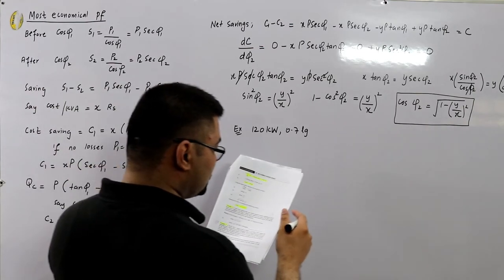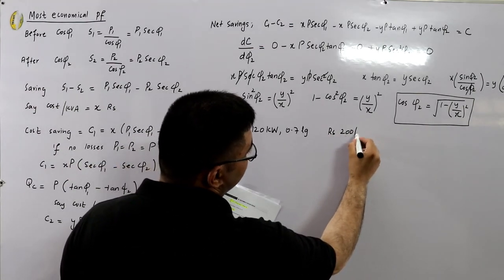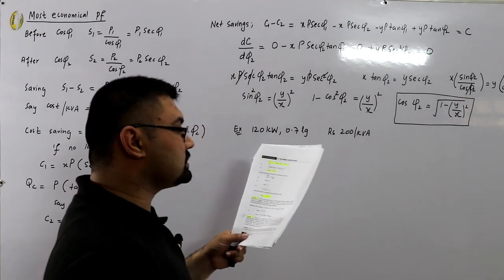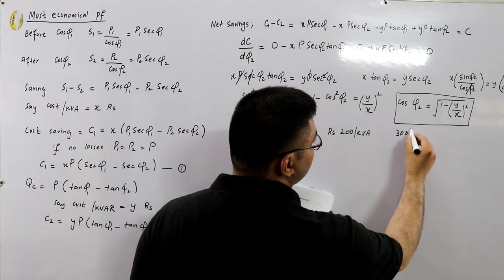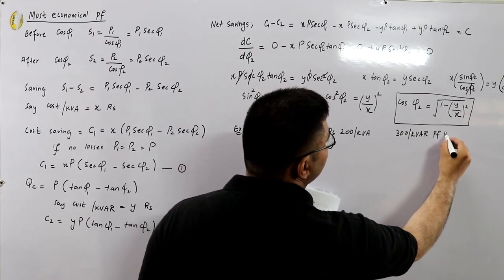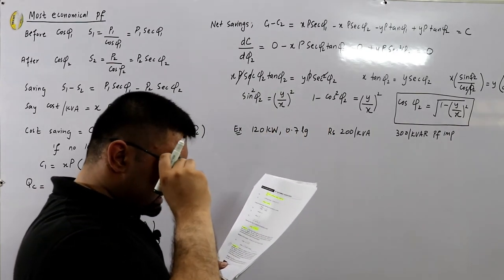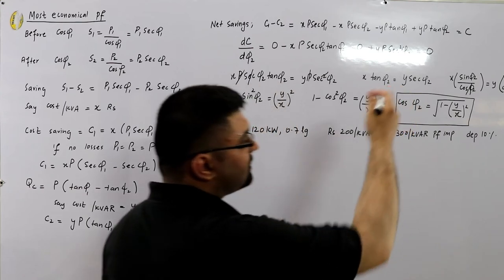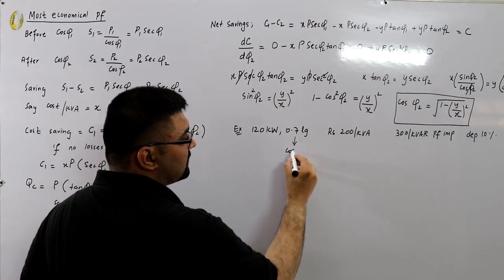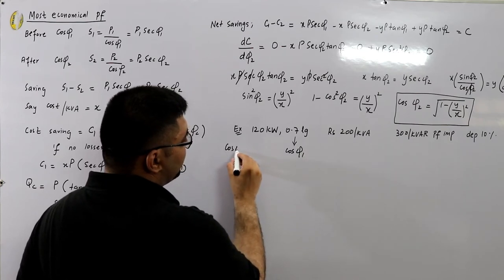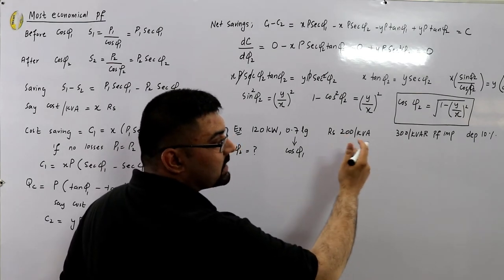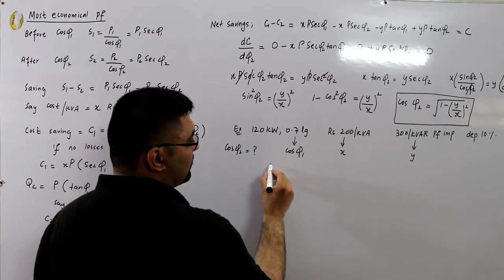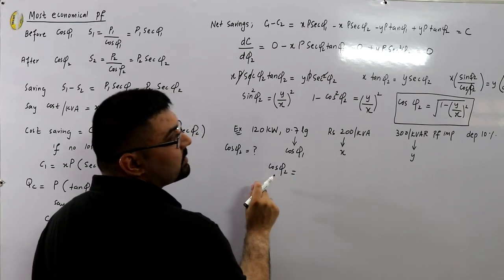The plant is charged Rs. 200 per kVA per annum — this is X. The power factor correction equipment costs Rs. 300 per kVAr, depreciated by 10%, so Y = 300 × 0.1 = 30 per kVAr per annum. Plugging into the formula: cos(φ2) = √[1 − (30/200)²].